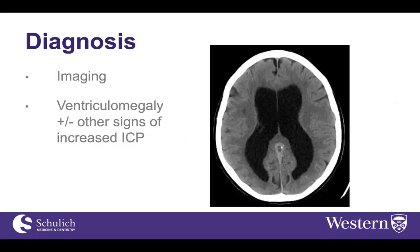Diagnosis is relatively straightforward — many patients get a CT scan. The classic sign is ventriculomegaly, as demonstrated in this slide. There may also be crowding of the basal cisterns, crowding of the sulcal spaces, and loss of white and gray matter differentiation. In patients with chronic hydrocephalus, the ventricles may be enlarged regardless of acute obstruction, so CT may not be particularly helpful.